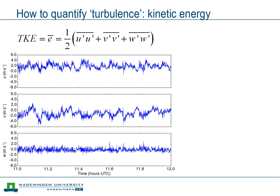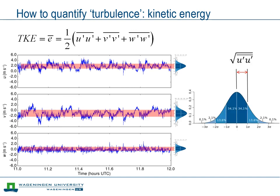Considering the three components of a turbulent velocity field, we see that there is turbulent kinetic energy in each of the three components. We can summarize the turbulent fluctuations with the probability density function, which we assume to be approximately Gaussian. The width of the probability density function is a measure of the amplitude of the turbulent fluctuations. In fact, the square root of the variance of a component is the standard deviation of that velocity component.